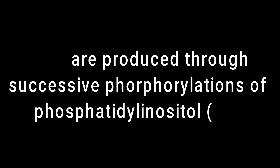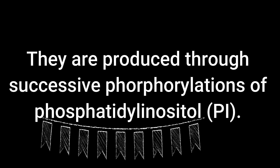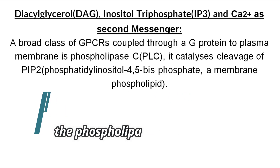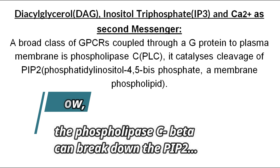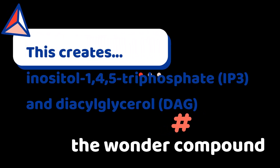When PIP and PIP2 are produced, they are produced through successive phosphorylation of PI or phosphatidylinositol. Once this G-protein activation takes place, phospholipase C beta can go ahead and break down PIP2. This creates inositol-1,4,5-triphosphate or IP3, and the compound known as DAG, that is diacylglycerol. Both of these are second messengers.